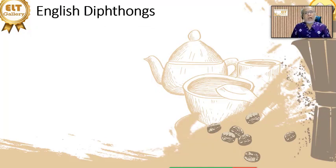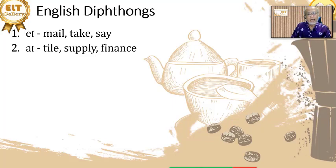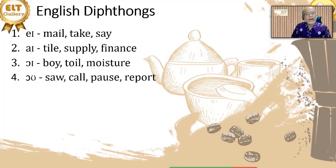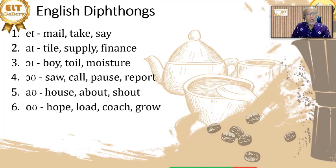English diphthongs are mostly tense. We have: AI like in 'meal,' 'take,' 'say'; I like in 'tile,' 'supply,' 'finance'; OI like in 'boy,' 'toil,' 'moisture'; OR like in 'call,' 'pause,' 'report'; AU like in 'house,' 'about,' 'shout'; and O like in 'home,' 'load,' 'coach,' and 'grow.'